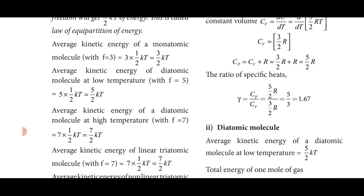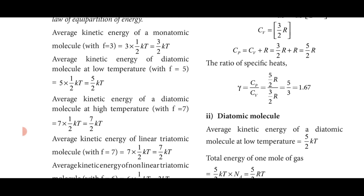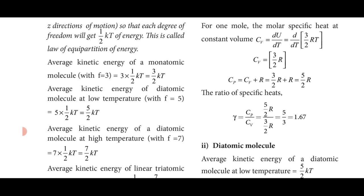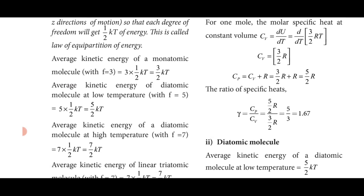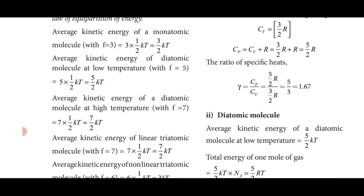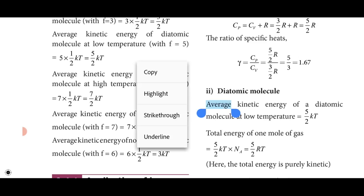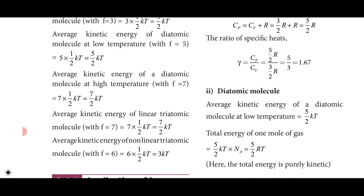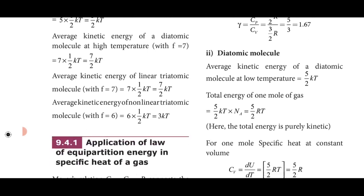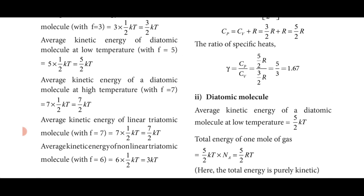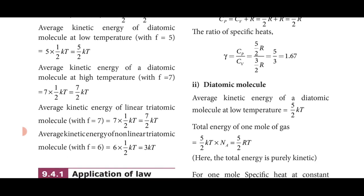For a monoatomic molecule, f = 3, so the average kinetic energy is 3 × ½kT = 3/2 kT. For diatomic at low temperature f = 5, giving 5/2 kT; at high temperature f = 7, giving 7/2 kT. For a linear triatomic molecule f = 7, giving 7/2 kT, and for non-linear triatomic f = 6, giving 6 × ½kT = 3kT.